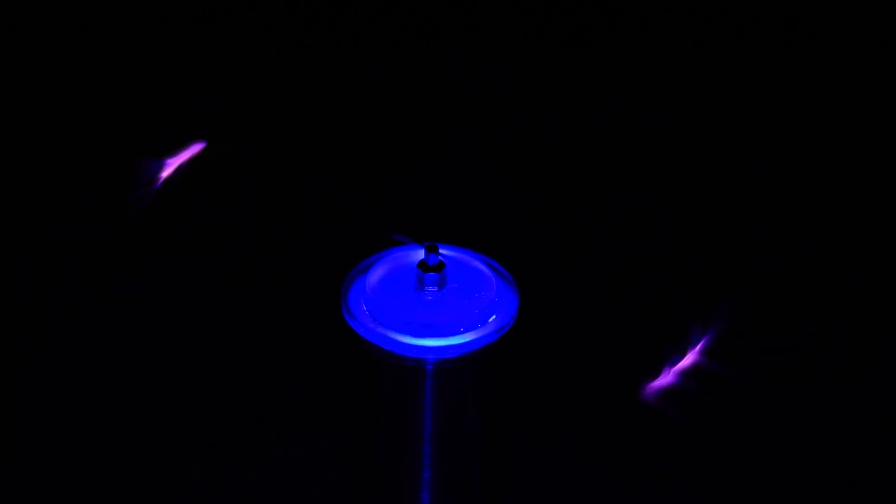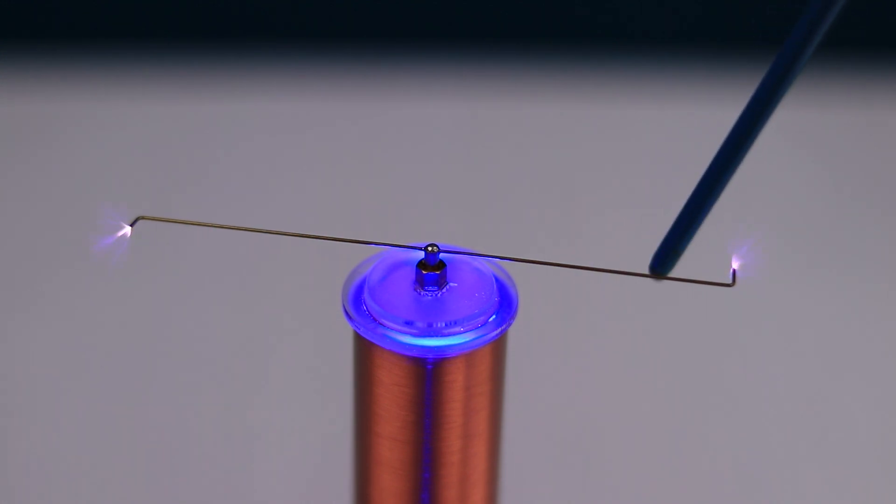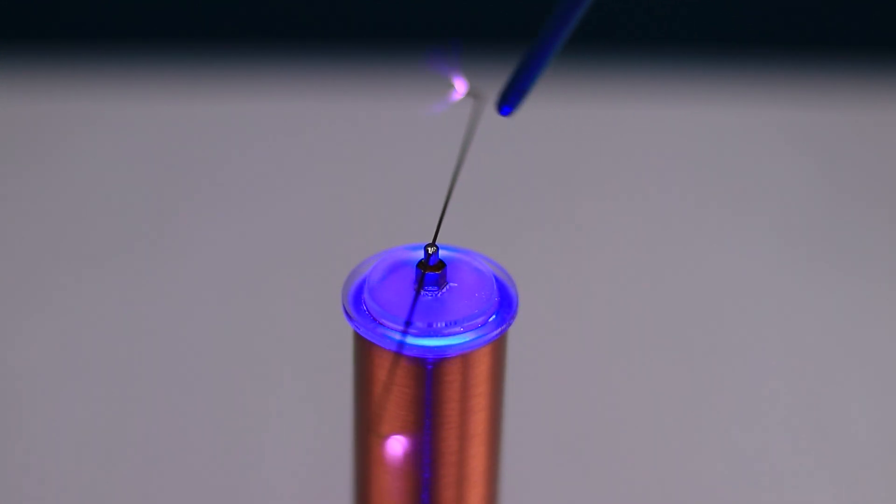One thing might have come to your mind: why is it rotating? This is because the arc emitting from two ends is heating the air making it flow. As the two arcs emit in opposite directions, they are like pushing the two ends in the opposite direction, thus generating thrust and making the windmill rotate.